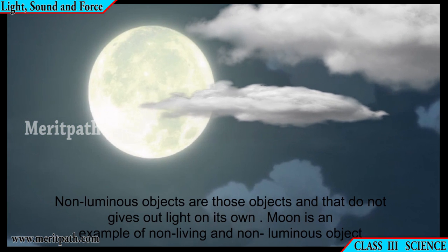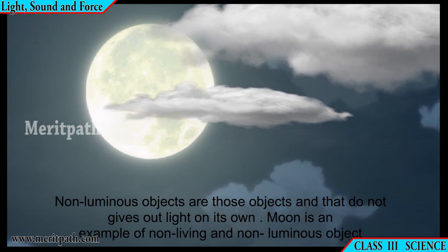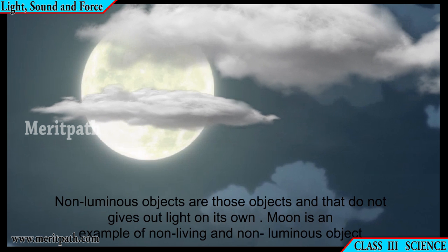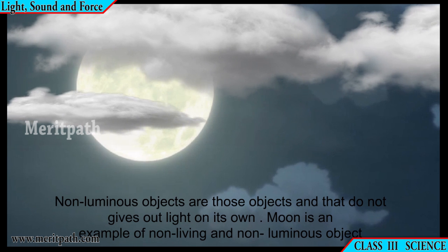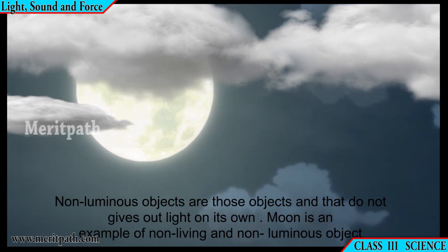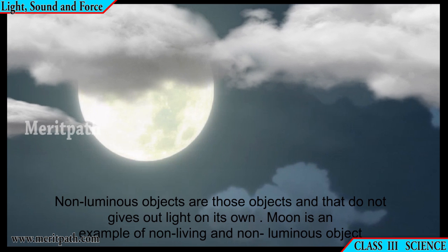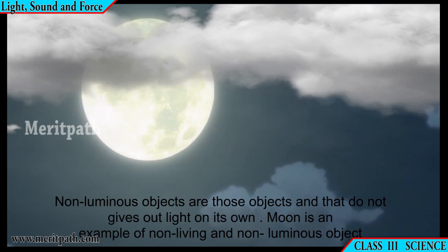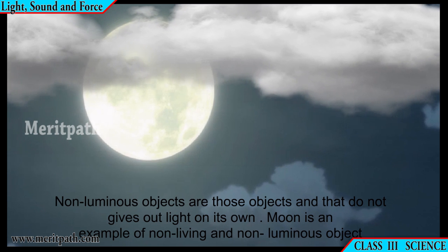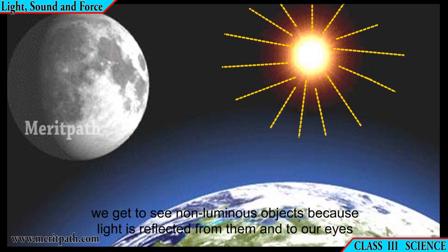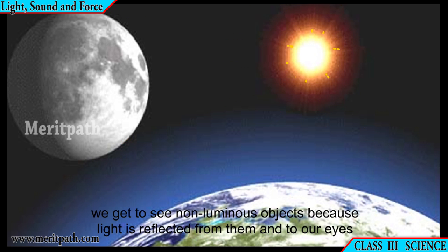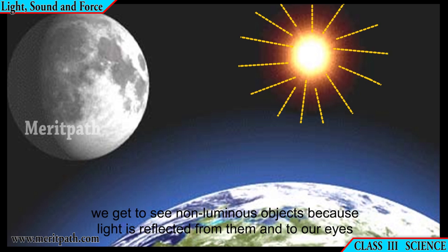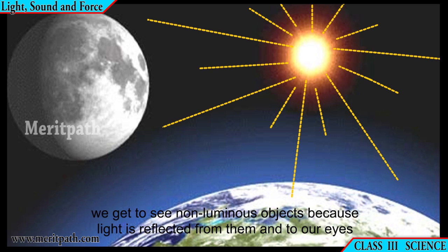Non-luminous objects are those objects that do not give out light on their own. The Moon is one example of a non-living non-luminous object. We get to see non-luminous objects because light is reflected from them and into our eyes.